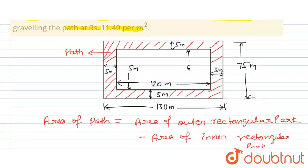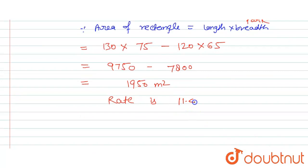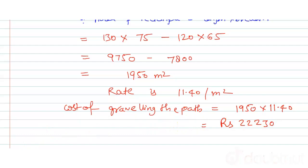Now we will find the cost. The rate is 11.40 per meter square, and the total area is 1950 meter square. Cost of graveling the path is 1950 multiplied by 11.40, which equals rupees 22,230. This is the final answer for this question.